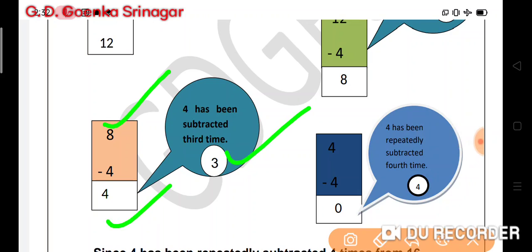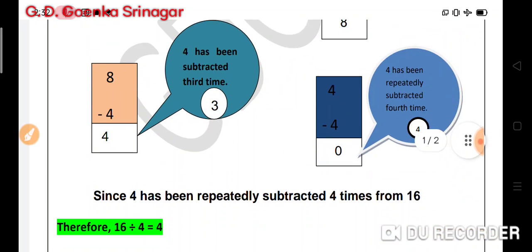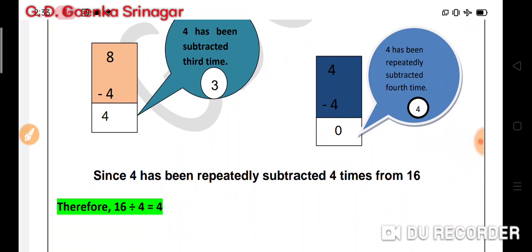So 8 minus 4 is equal to 4. Now we will subtract 4 from 4, and 4 has been repeatedly subtracted for the fourth time and the answer here is 0. Since 4 has been repeatedly subtracted 4 times from 16, therefore 16 divided by 4 is equal to 4. We subtracted 4 times and we got our answer 4.